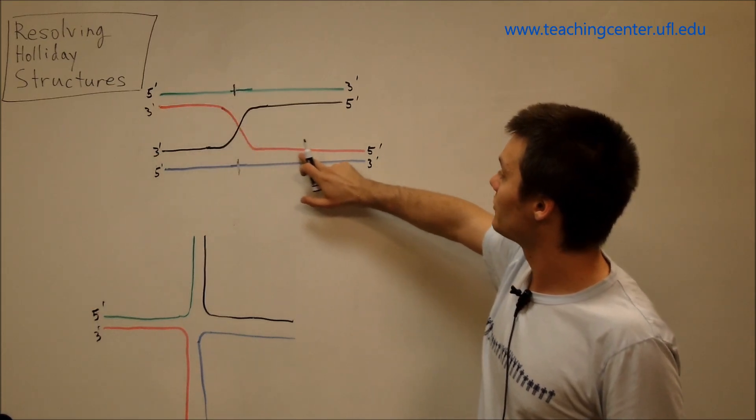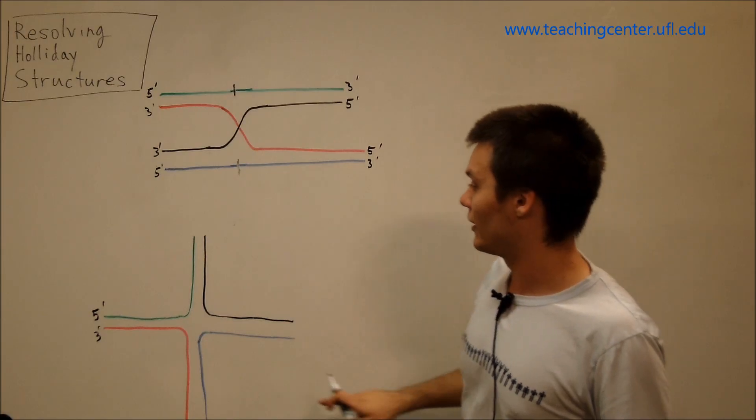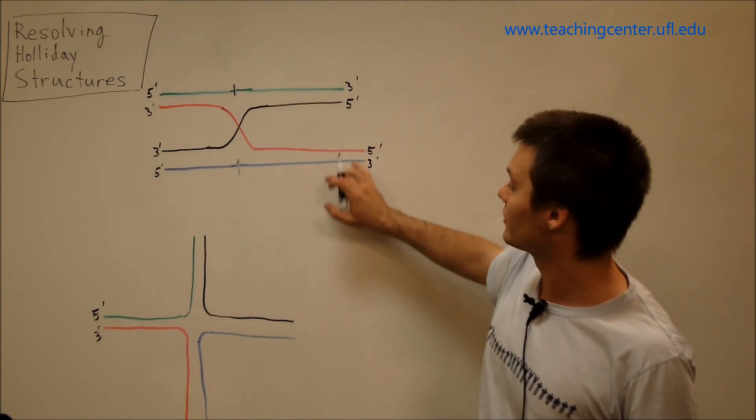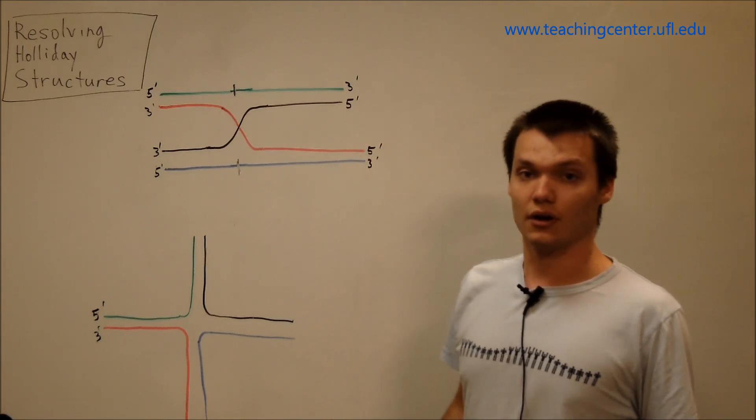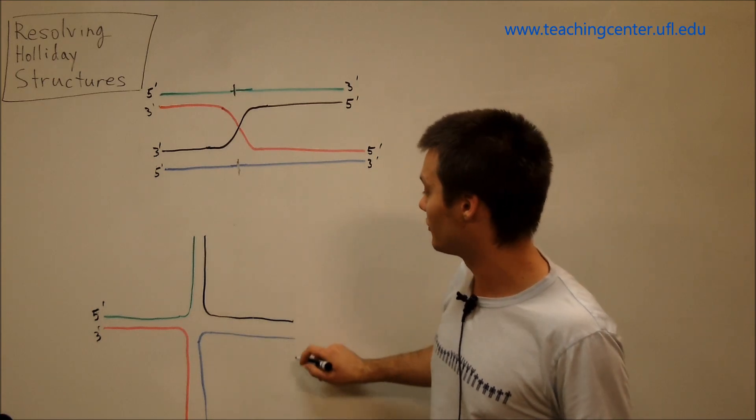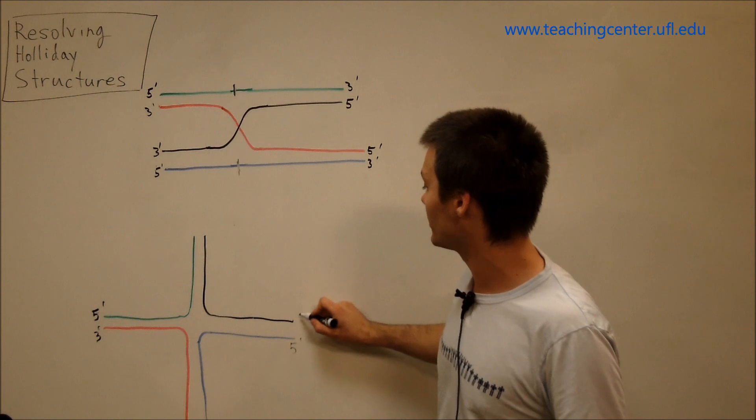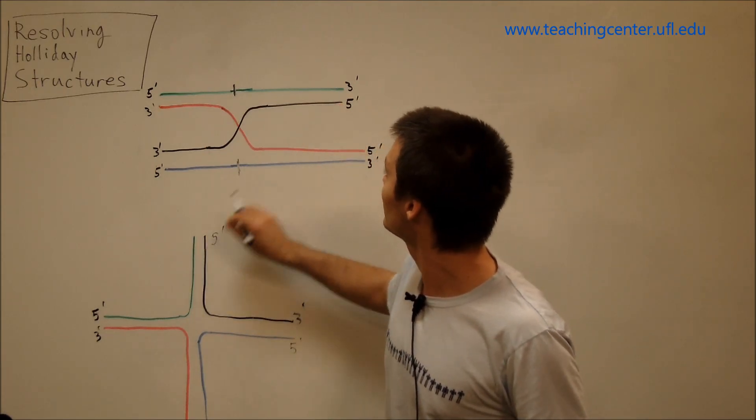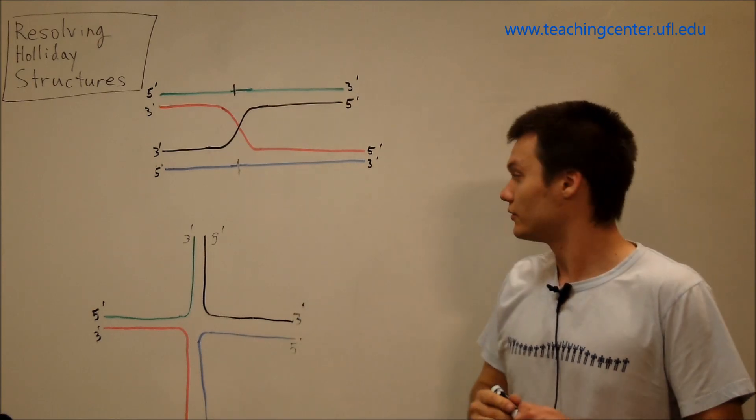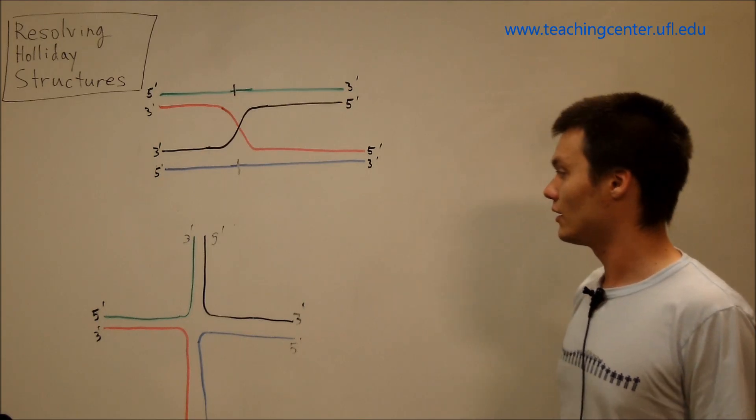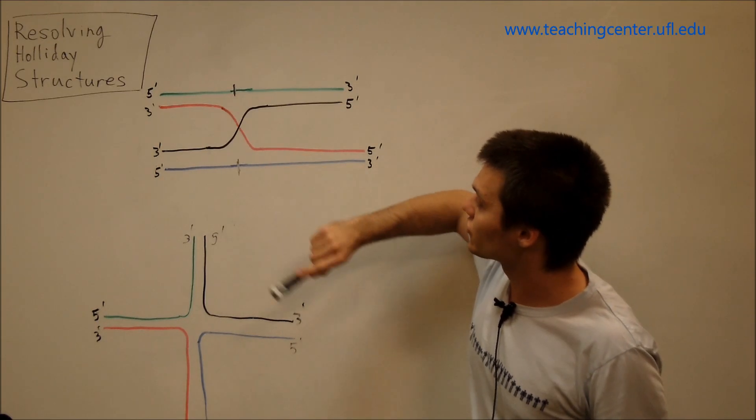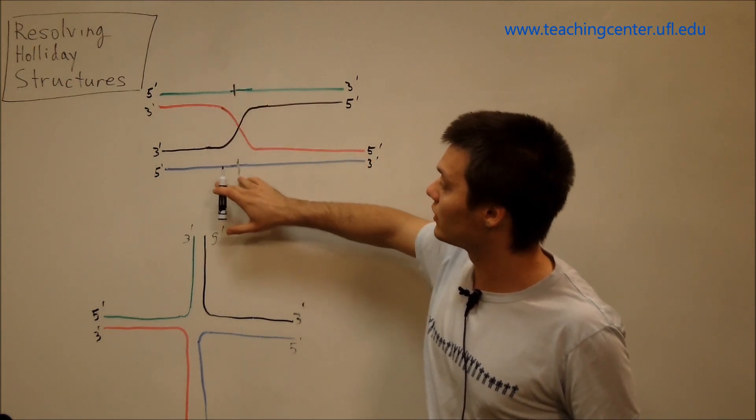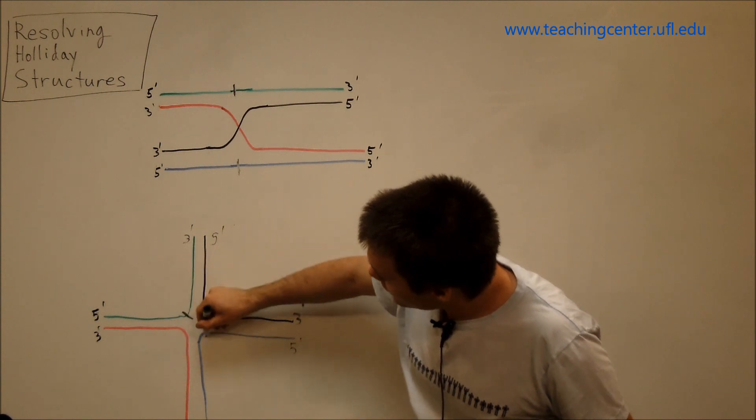Then our red strand goes and then base pairs to this blue strand. And so we have that just like that here. So our five prime end of our red strand is base pairing to this three prime end of the blue strand. And the five prime end of the blue strand is base paired to the three prime end of the black strand. And, of course, the five prime end of the black strand is base paired to the three prime end of the green strand, just as we have it up here. So now, what happens when we want to make a cut in this strand and this strand? Well, let's draw it on this structure. So it's in the middle of this green strand and then in the middle of this blue strand, in the middle of this green strand and in the middle of this blue strand.